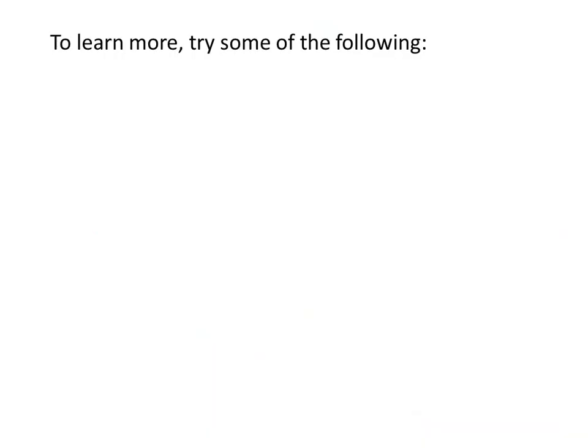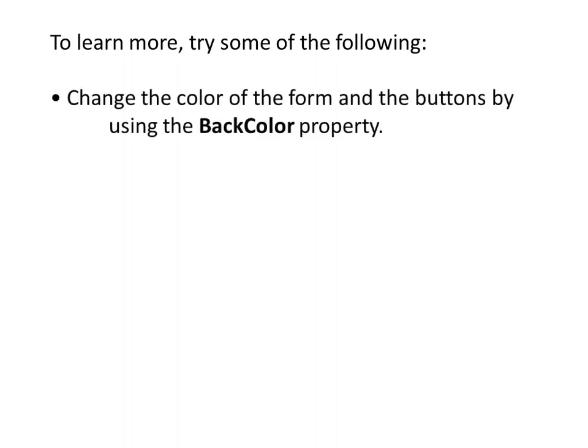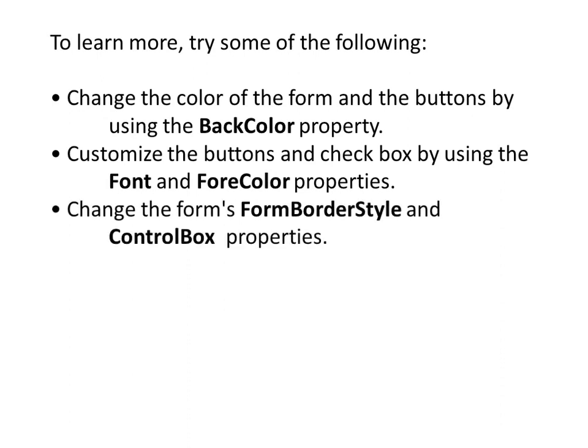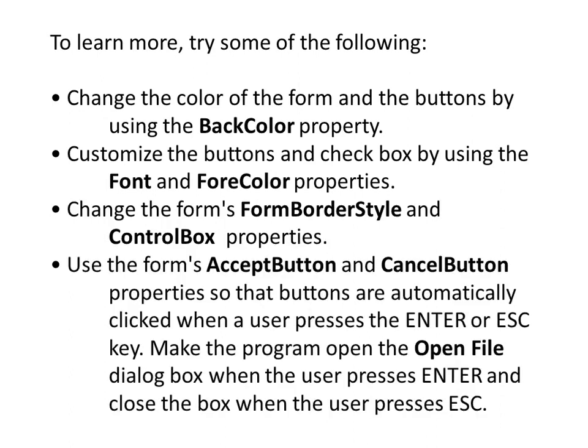To learn more, you can try improving the program by doing some of the following: change the color of the form and the buttons by using the back color property; customize the buttons and checkbox by using the font and fore color properties; change the form's border style and control box properties; use the form's accept button and cancel button properties so that buttons are automatically clicked when a user presses the Enter or Escape key; make the program open the open file dialog box when the user presses Enter and close the box when the user presses Escape.